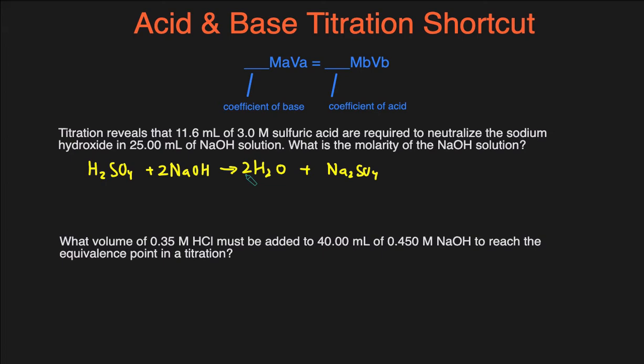So then once we have the reaction, we can just put the numbers underneath. So we have 11.6 milliliters of the acid, 3.0 molar of the acid, and in terms of the base, we have 25 milliliters of the base, and we're trying to figure out the molarity of the base. So then I'll call this the acid, A, and then this is the base, B.